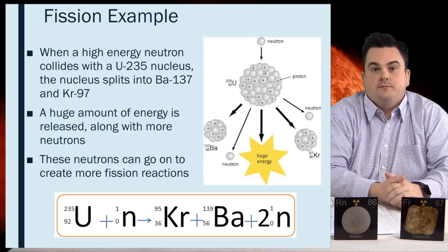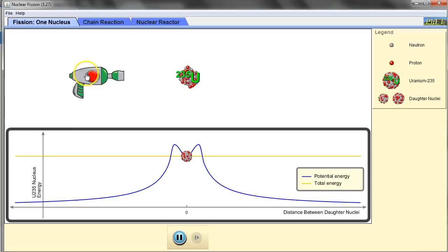Remember in artificial transmutation, we bombard nuclei with particles. In fission specifically, we bombard uranium-235 with a neutron. So let's do that right now. Boom! I hit it with a neutron. The nucleus is very unstable and eventually it splits into two medium-sized nuclei and more neutrons.